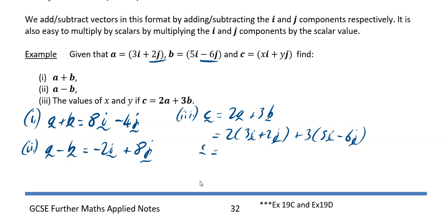Your c is going to equal 6i plus 4j plus 15i minus 18j.